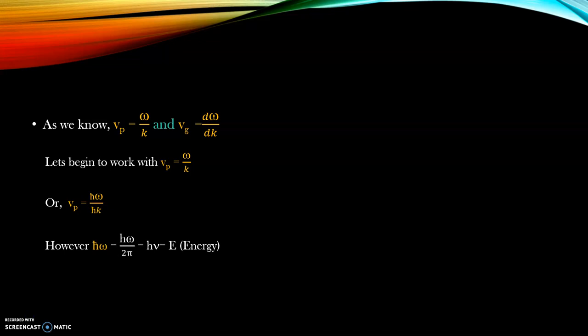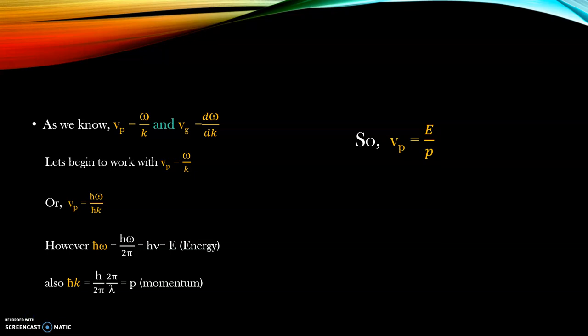Now let us look into the quantity h-cut omega. If I write it explicitly, h-cut omega is h omega by 2pi, and omega by 2pi is nothing but the frequency. Hence, we get the product of h into nu, which is nothing but the energy of the particle. Also, h-cut k is shown to be just the momentum of the particle itself.